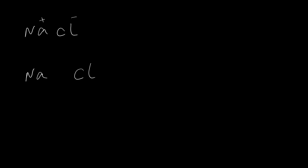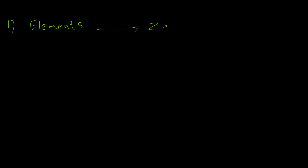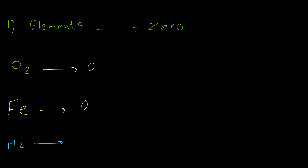How do we identify oxidation number? There are six rules. If we follow these six rules, we can find the oxidation number for any atom. The first rule says that in elemental form, atoms always have zero oxidation number. For example, O2: the oxidation number for each oxygen atom is zero. Iron in elemental form: oxidation number is zero. H2: each hydrogen atom has oxidation number zero.